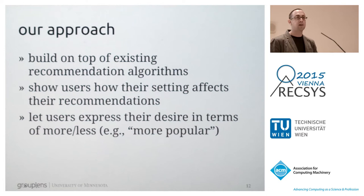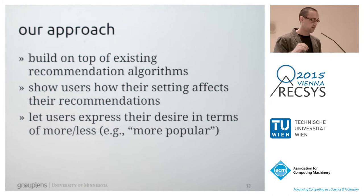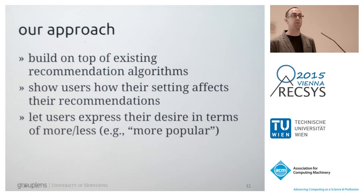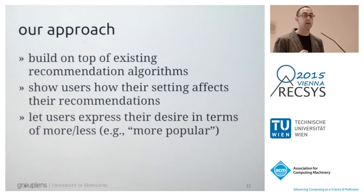Our method is based on three principles. First, there are great recommender algorithms out there — collaborative filtering, machine learning, learning to rank. Let's not throw them out; let's build on top of them. Second, we immediately show the user how their changes affect the resulting recommendations so they can determine if things are better or worse. Third, let users express a simple more-or-less preference — for example, if the recommender shows too many obscure items, let them say 'make it more popular.'